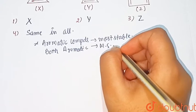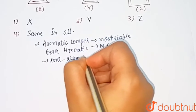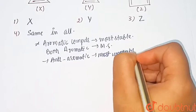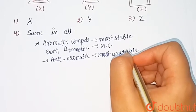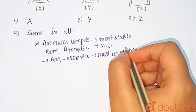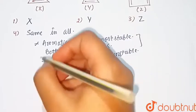Barrier to rotation - if ring have anti-aromatic, which is most unstable compound, then it will have most barrier in rotation. So that will be our answer. First we know about what is aromatic and anti-aromatic compound.